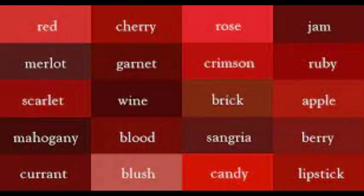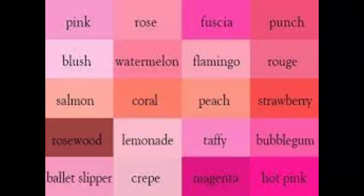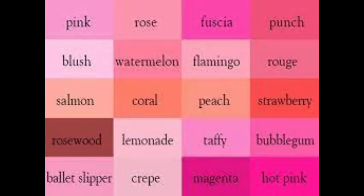After red, we have pink. Here are its own shades: pink, rose, fuchsia, punch, blush, watermelon, flamingo, rose, salmon, color, peach, strawberry, rosewood, lemonade, taffy, bubblegum, ballet slipper, crab, magenta, and hot pink.